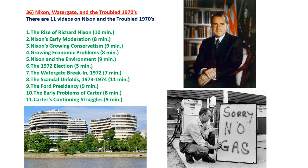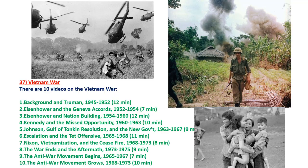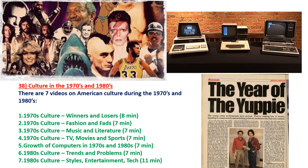Moving on chronologically, the next topic has 11 videos pertaining to Nixon and Watergate and the troubled 1970s — things like the energy crisis, the Ford presidency, and Jimmy Carter's presidency. During the 1970s, the Vietnam War finally ended, and there's a separate topic on the Vietnam War — 10 videos in total — going back to the roots of the conflict during Truman's presidency and following chronologically all the way through the 1970s.